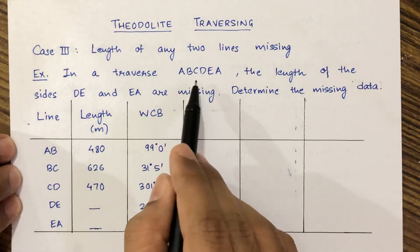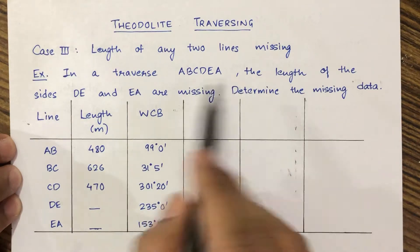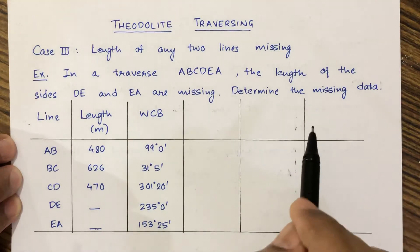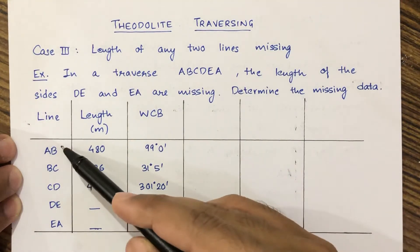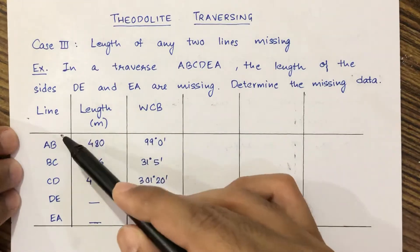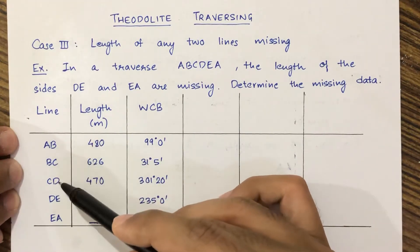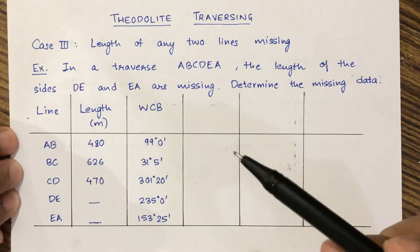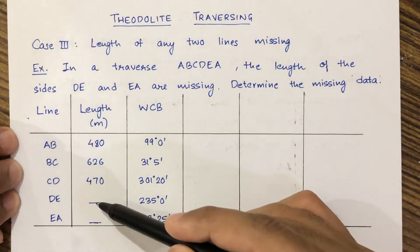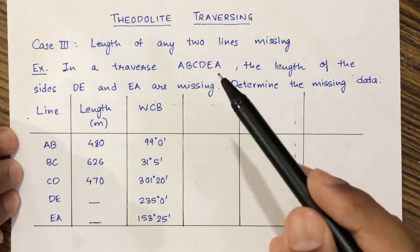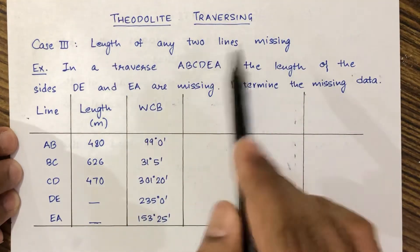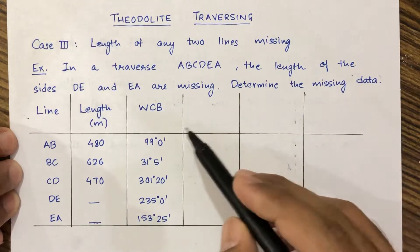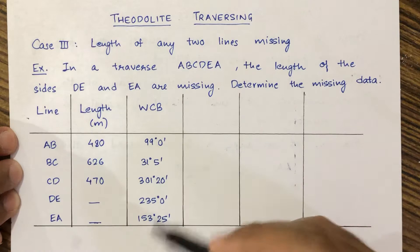In a traverse ABCDEA, the length of the sides DE and EA are missing. Determine the missing data. There are 5 lines and the lengths for AB, BC, and CD are given, but for DE and EA the lengths are missing — that is Case 3, length of any two lines missing. The whole circle bearing values are also provided for each line.